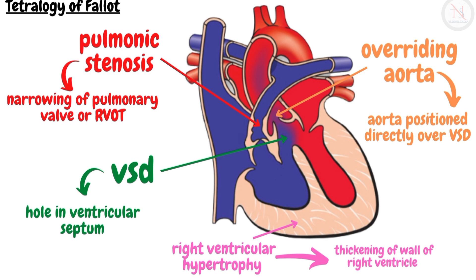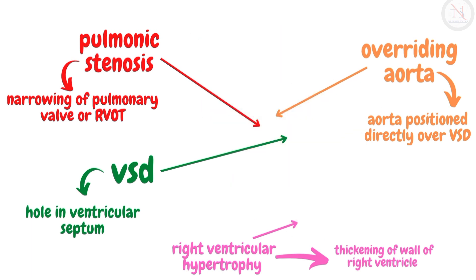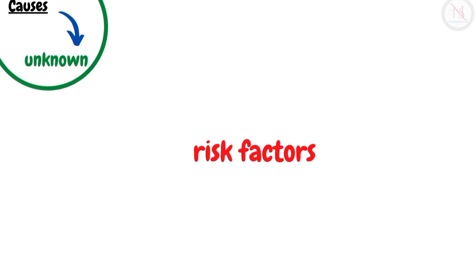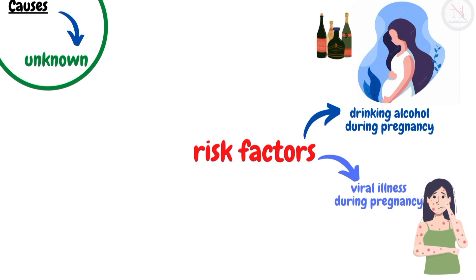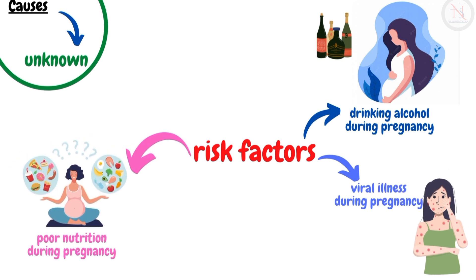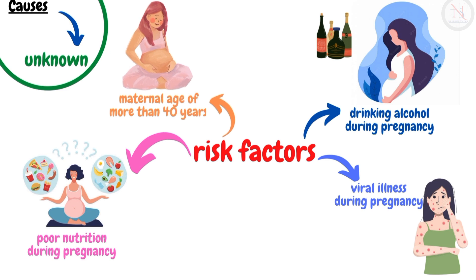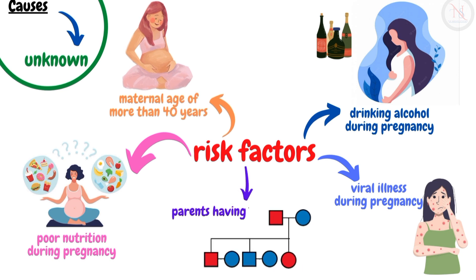The causes of tetralogy of Fallot are usually unknown. Risk factors include drinking alcohol during pregnancy, viral illness during pregnancy such as rubella, poor nutrition during pregnancy, maternal age of more than 40 years, and parents having tetralogy of Fallot.